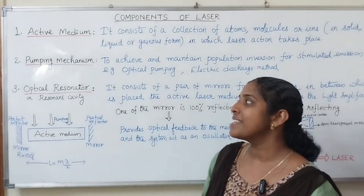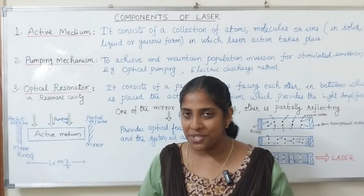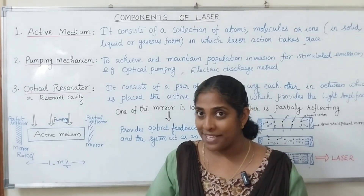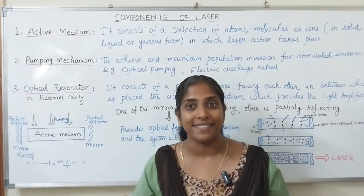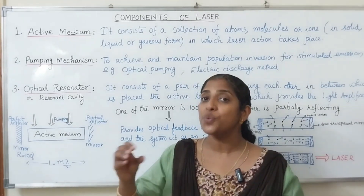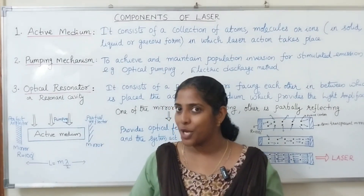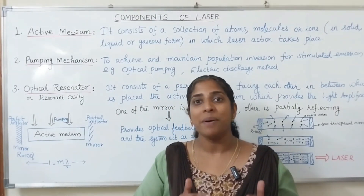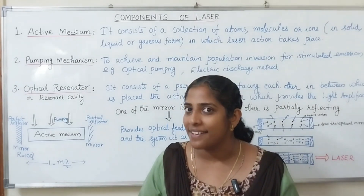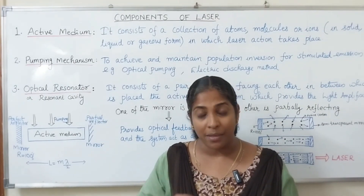The second component is the pumping mechanism. For laser action to take place we require stimulated emission, and for stimulated emission we need population inversion — the number of atoms in the higher level must be greater than in the lower level. To achieve and maintain that population inversion, a pumping mechanism is required for raising the atoms from the lower level to the higher level. The main methods are optical pumping, electrical discharge method, and chemical pumping.